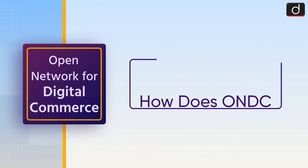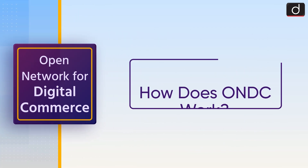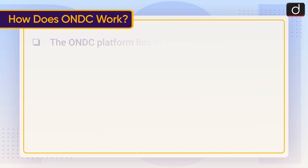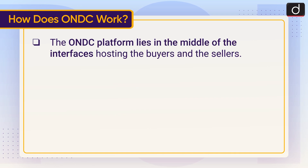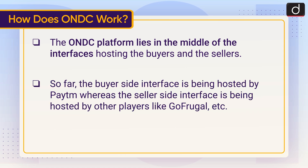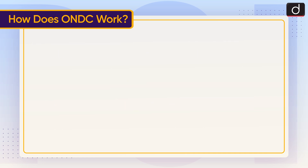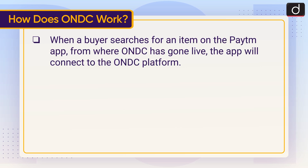Now let's understand how ONDC works. The ONDC platform lies in the middle of the interfaces hosting the buyers and the sellers. So far, the buyer-side interface is being hosted by Paytm, whereas the seller-side interface is being hosted by other players like GoFrugal. When a buyer searches for an item on the Paytm app, from where ONDC has gone live, the app will connect to the ONDC platform.